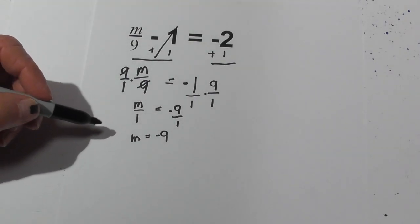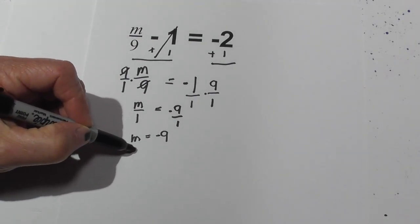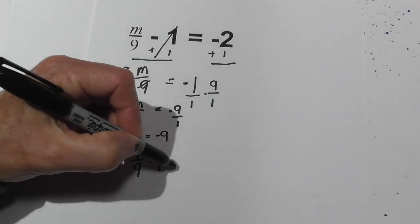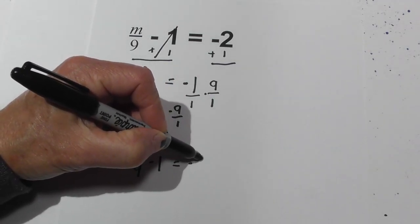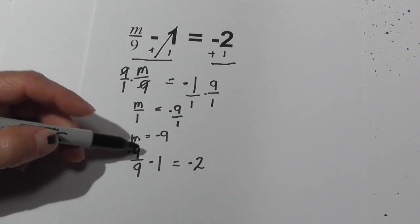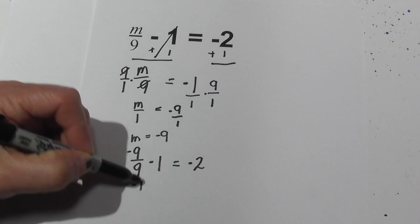Now let's plug it into the original equation. We have negative 9 over 9 minus 1, and that should equal negative 2. Negative 9 divided by 9 is negative 1.